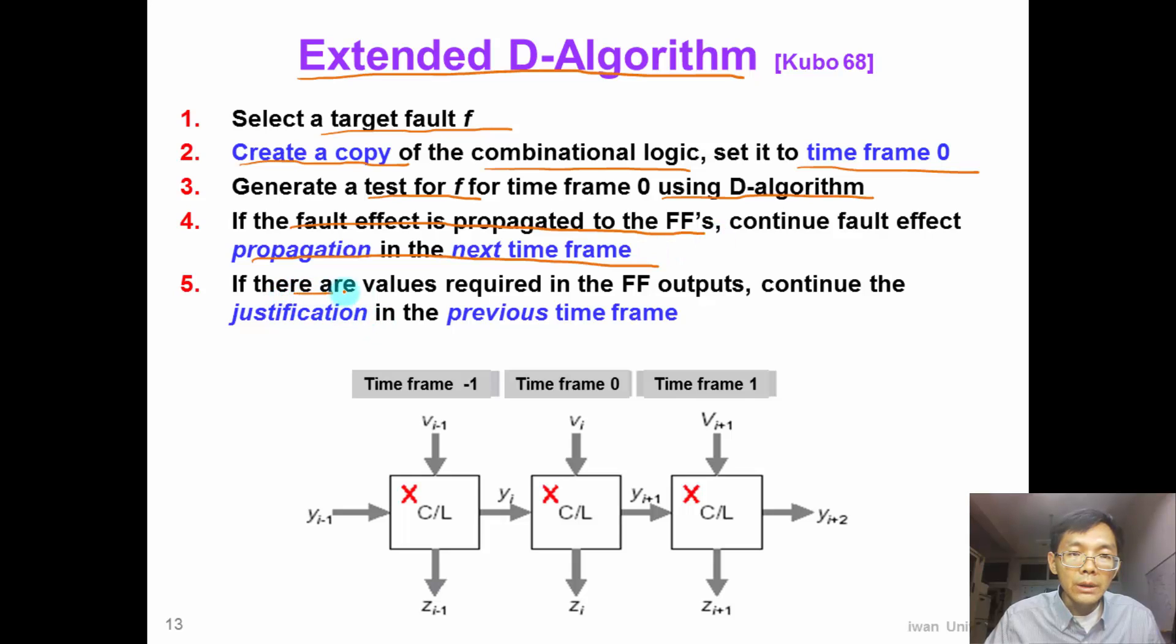Step 5, if there are values required in the flip-flop output, we can continue the justification in the previous time frame. That means we can replicate the circuit to the left.